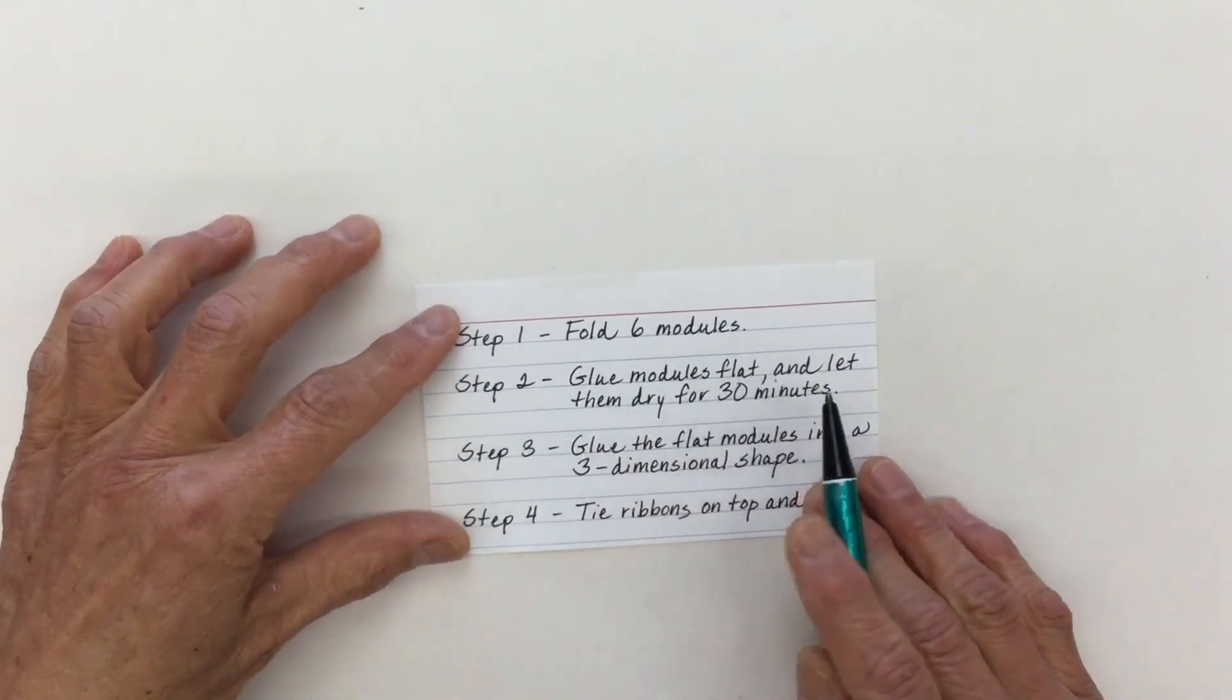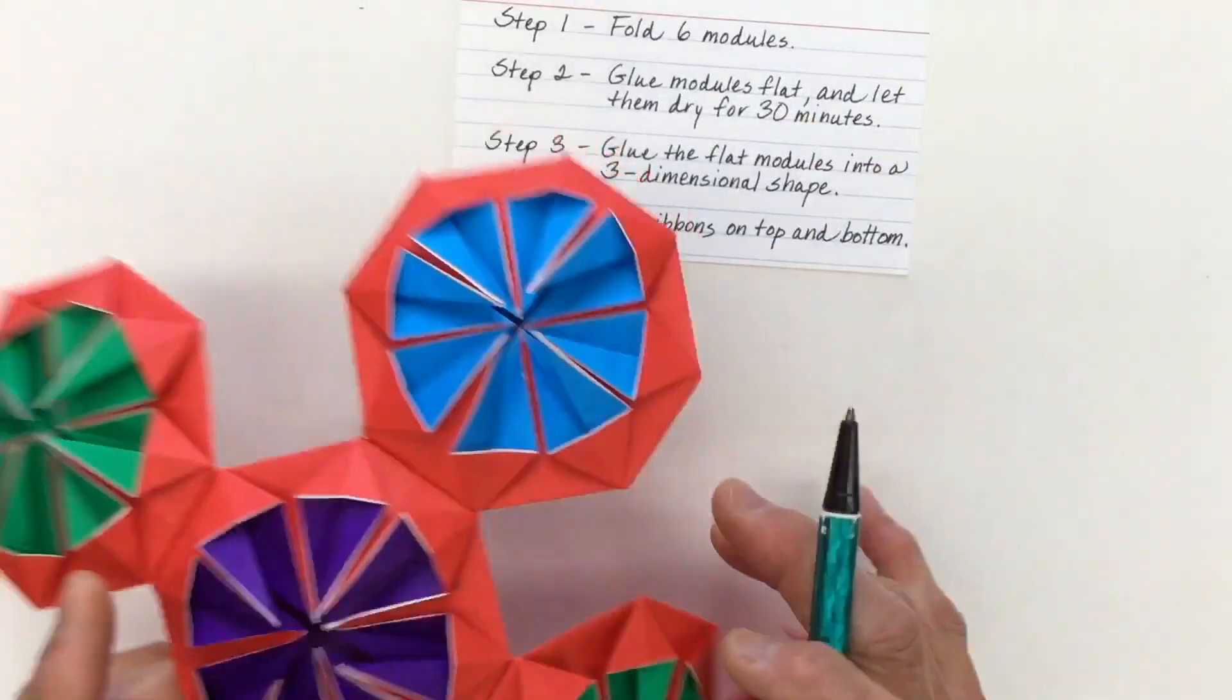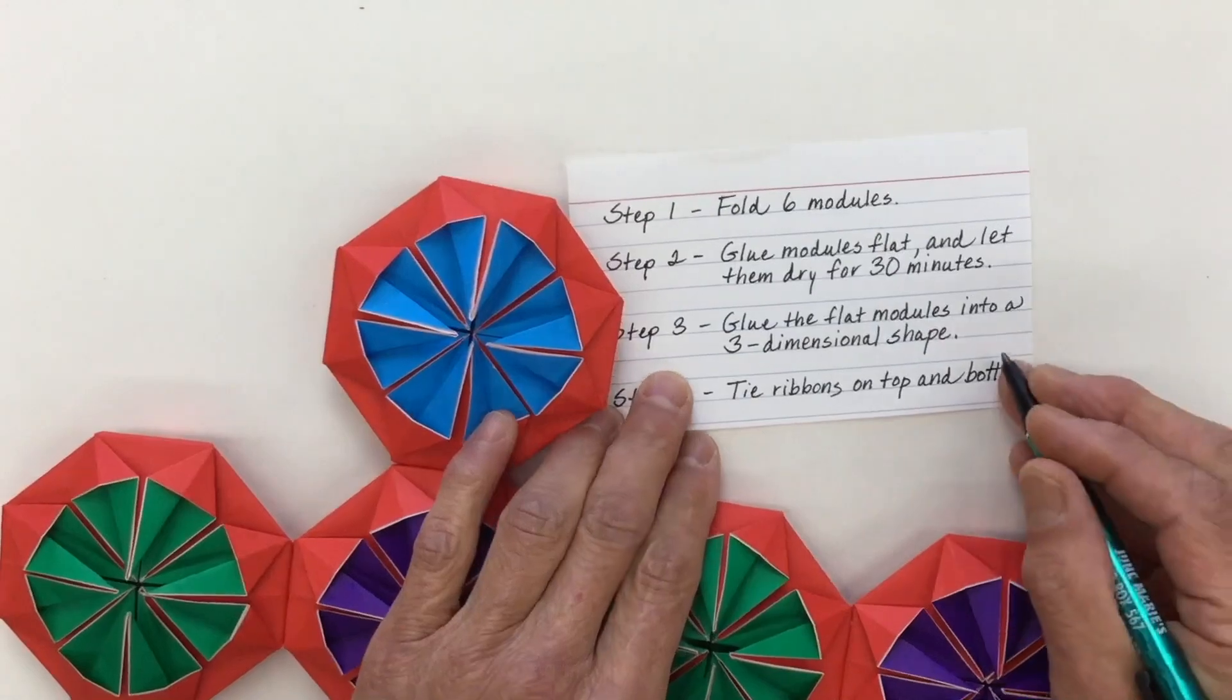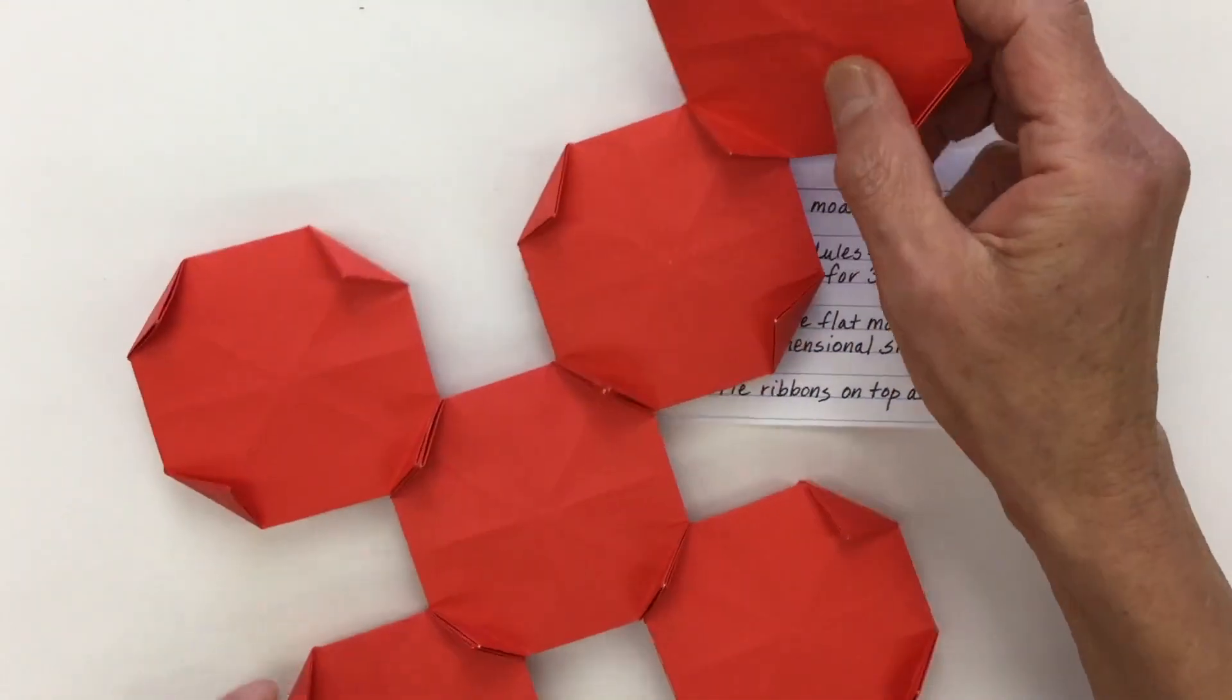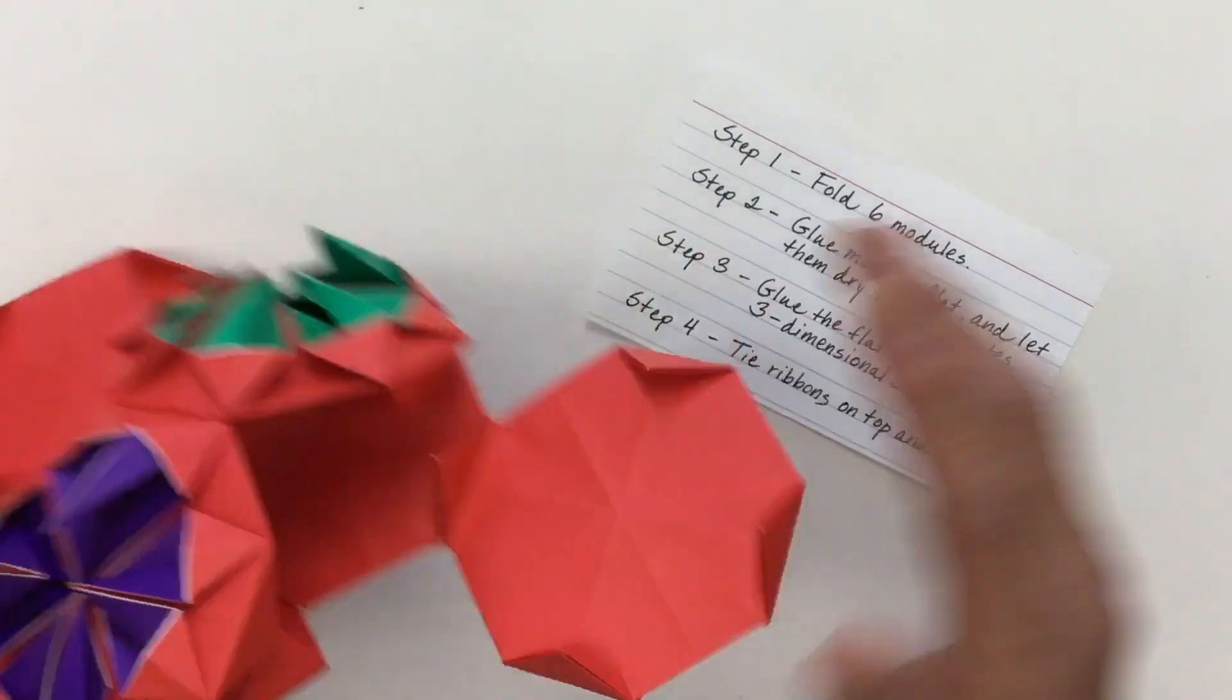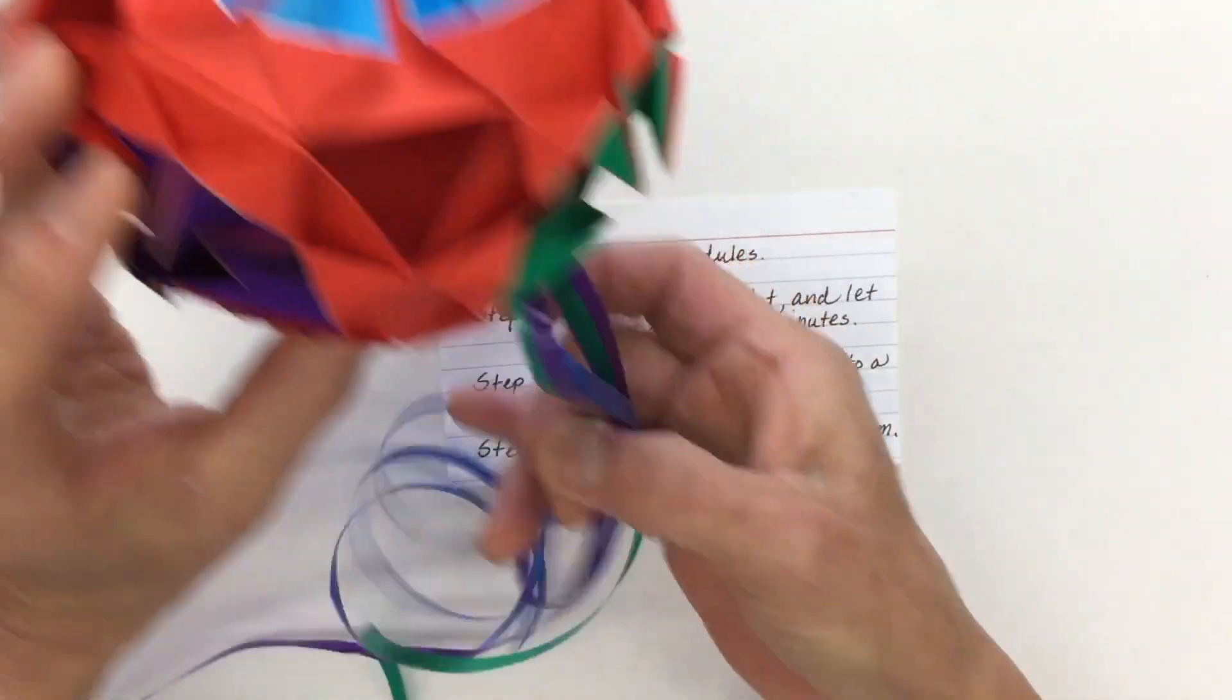In step two, we're going to glue the modules flat and let them dry for 30 minutes. In step three, we will glue the flat modules into a three-dimensional shape, turning it into something like a globe. And in step four, we'll tie ribbons on the top and on the bottom.